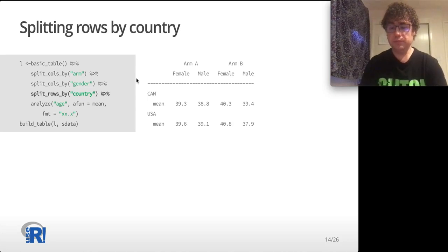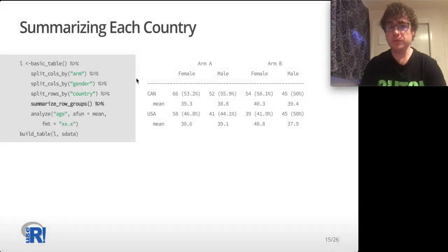Next we're going to summarize each of these countries. By summarize I mean count how many observations there were for that country and what percentage of all of the observations within the column that it is in that represents. So Canada had 66 females in arm A and that was 53% of all the females in arm A. All we had to do to do that is summarize_row_groups. This is the default summarization behavior. You can actually control that and make the summarization do whatever you want, which we'll see a little bit later in this talk, but the default is pretty nice.